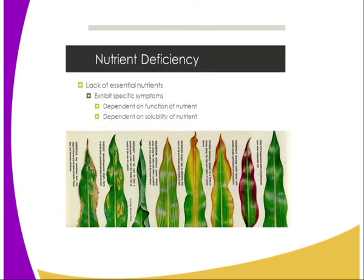Nutrients deficiency. Micronutrients are known to cause some symptoms when they are not available in the soil — symptoms in plants. For instance, we have leaf chlorosis and also we have the anthocyanin, or purpling of the green pigment in plants, which turns to a purple color.